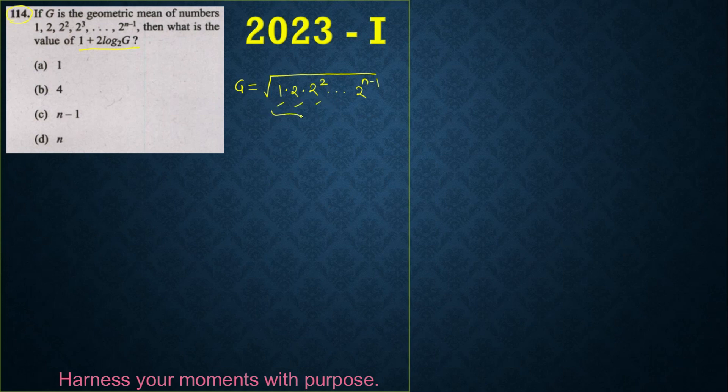So let's take only first three numbers. First three numbers means our n becomes 3. Now let's find out what is the value of g for first three numbers. So it is 1 into 2 into 2 square, which is nothing but 4, which is nothing but square root of 8. So square root of 8 can be written as 8 to the power 1 by 2.